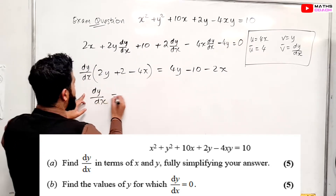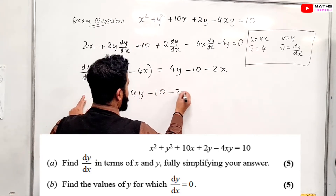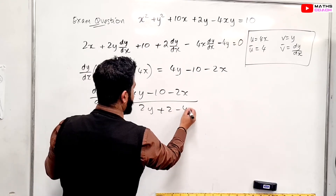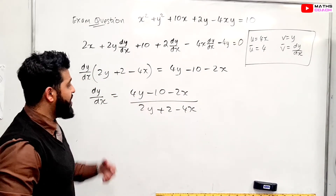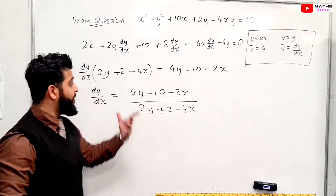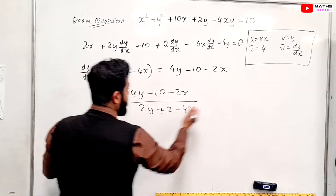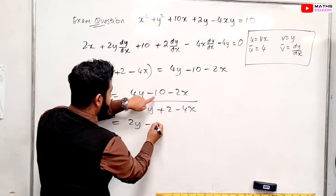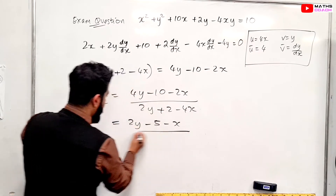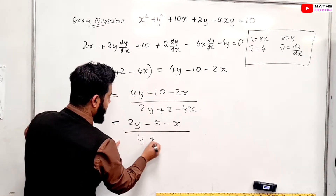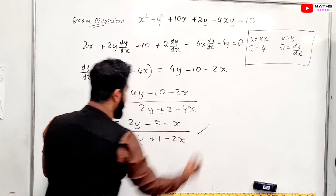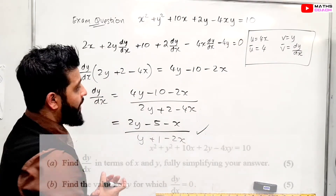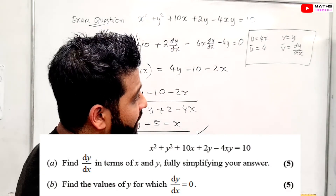So dy/dx equals (4y - 10 - 2x) all over (2y + 2 - 4x). We need to fully simplify — we can divide everything by 2, giving us dy/dx equals (2y - 5 - x) all over (y + 1 - 2x). This is the fully simplified answer for dy/dx.